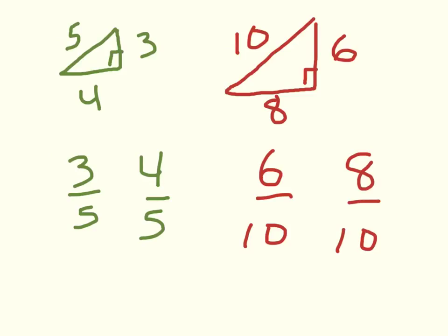If I have a triangle that's just a dilation of another one — an enlargement or a reduction — it's a similar triangle, and our triangles should have similar ratios. For example, short over long in the green one is 3 to 5. Short over long in the red one is 6 to 10, which is the same thing if you reduce it. So if you just have a bigger triangle that's similar, the ratios are the same.